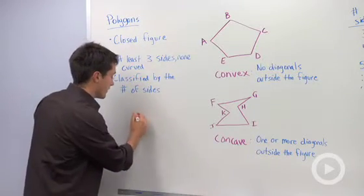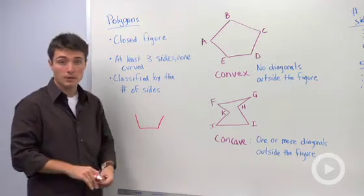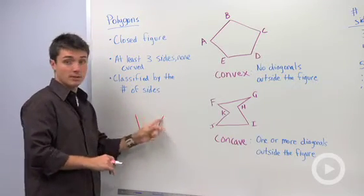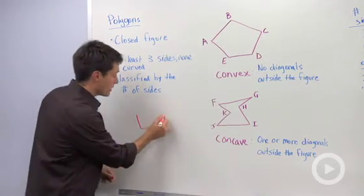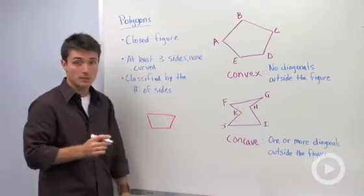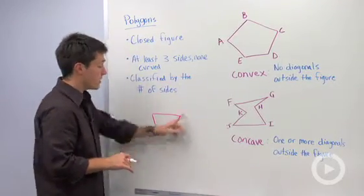So if I drew a figure down here, this would not be a polygon, because as you can see, there's this open space here. However, if I drew in a line segment, then it would be a polygon, because now it is closed.